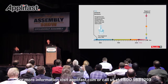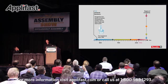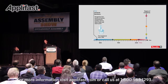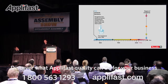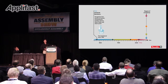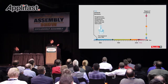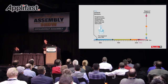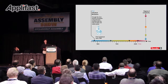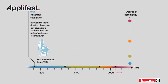Industry 4.0 gets its name from the idea that it is the fourth major industrial revolution. When we look back historically at all the industrial revolutions, one thing is very important to note. If we take a look on the very far right side, it shows the degree of complexity of each revolution. Starting with the first industrial revolution — the invention of steam power — which allowed us to power our manufacturing plants and do more with more energy.